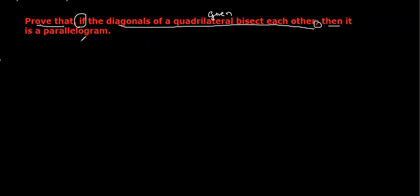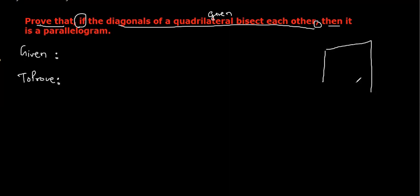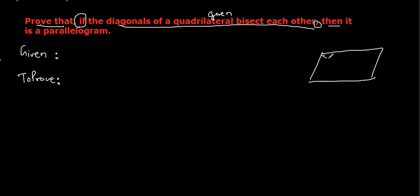That means I need to prove that it is a parallelogram — given and to prove. So let me just draw any random quadrilateral. Since we are going to make it a parallelogram, I'm just taking it as a parallelogram. Labeling the vertices A, B, C, D, and the intersection point O.